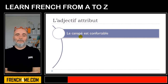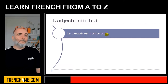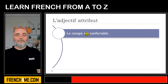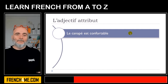In this structure you get the subject — le canapé — then you get the verb être, and then you get the adjective. This adjective is introduced by être, so it is an adjectif attribut. Le canapé est confortable.